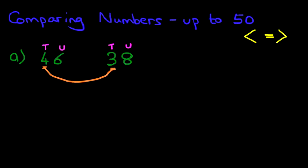Because 4 is larger than 3, they're not the same, so we don't even have to look at the units. The 6 and the 8 can be any number — it would not make any difference. The 4 tens are greater than 3 tens, so 46 is greater than 38.